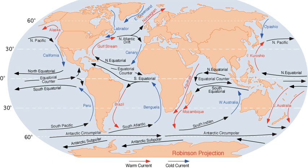Since plankton are the food of fish, abundant fish populations often live where these currents prevail. Ocean currents can also be used for marine power generation, with areas off of Japan, Florida and Hawaii being considered for test projects.